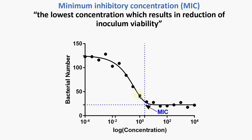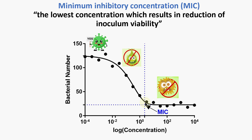What is MIC? Minimum Inhibitory Concentration can be defined as the lowest concentration which results in a reduction in cell viability. I will explain this with a graph. This is a plot of bacteria number against log concentration of an inhibitory compound. The MIC is the lowest concentration at which we observe 100% inhibition. Below this concentration, we observe varying degrees of inhibition below 100%, and above this concentration, we still observe complete inhibition.